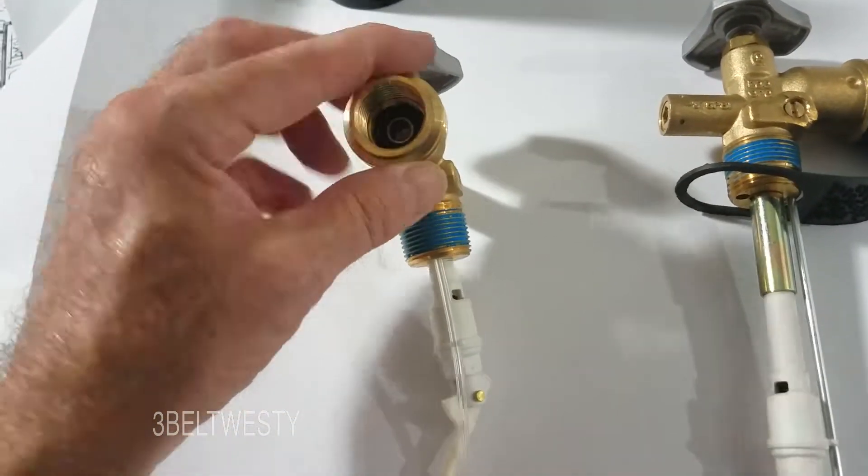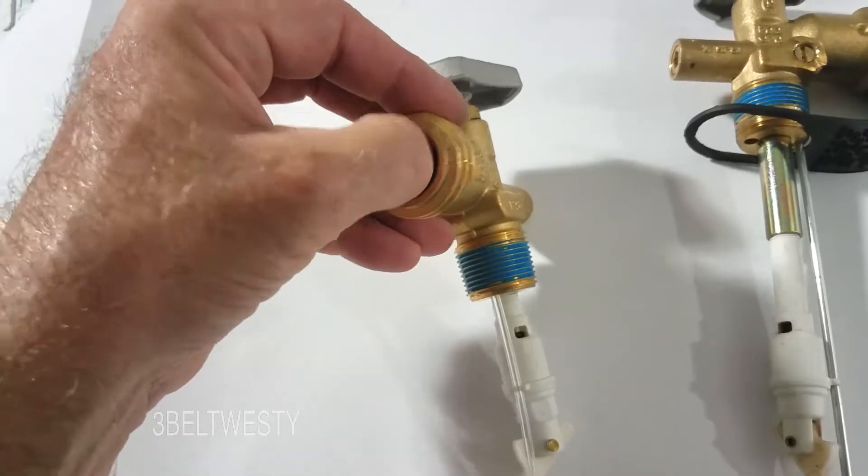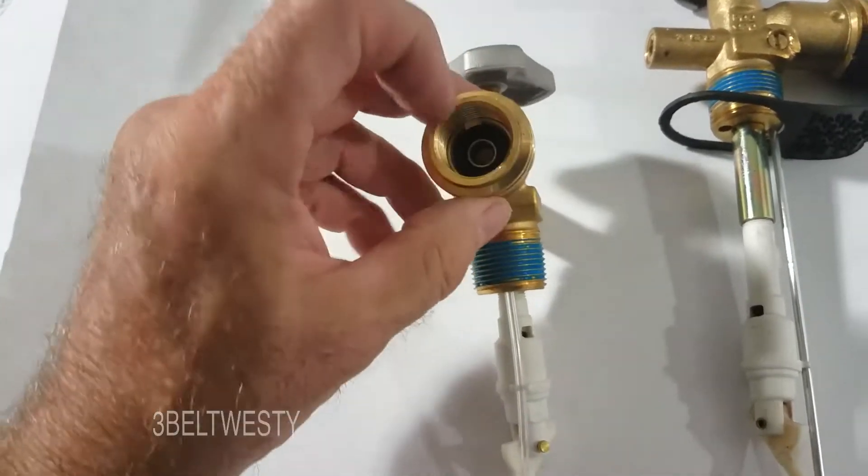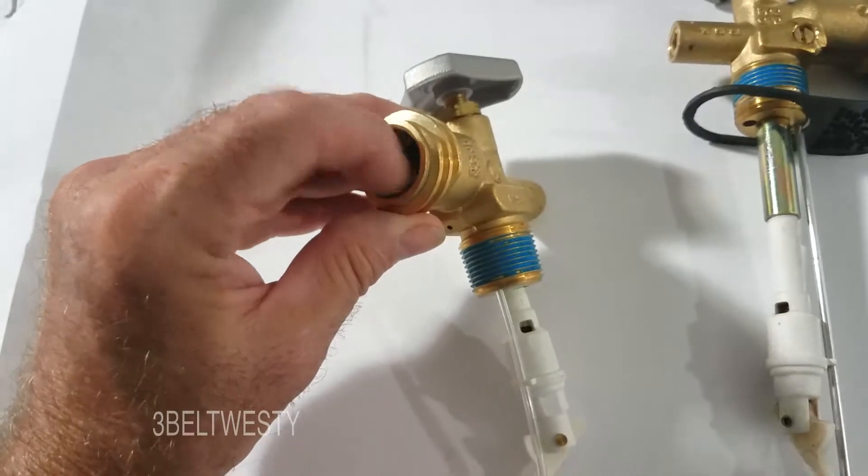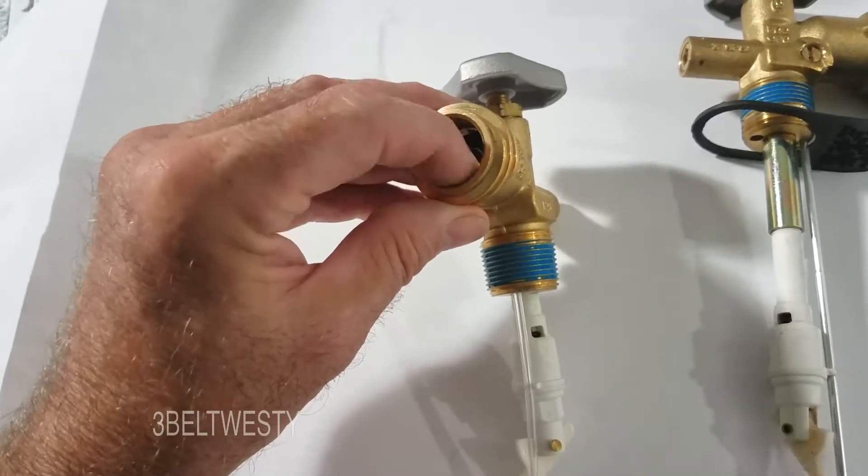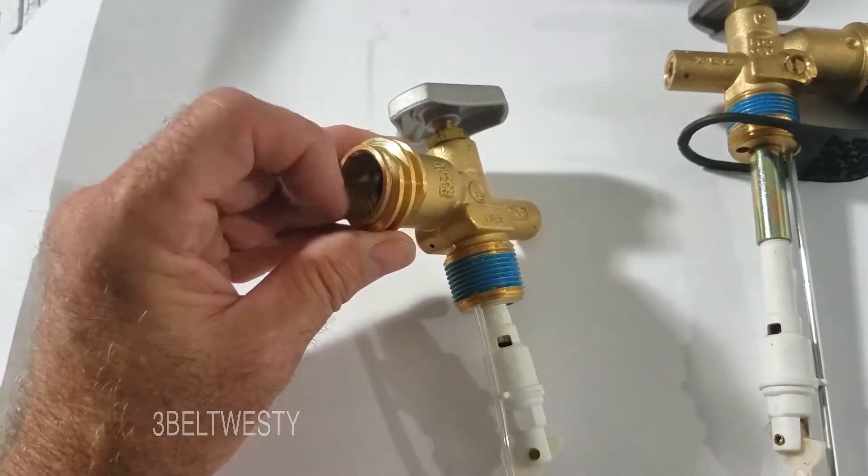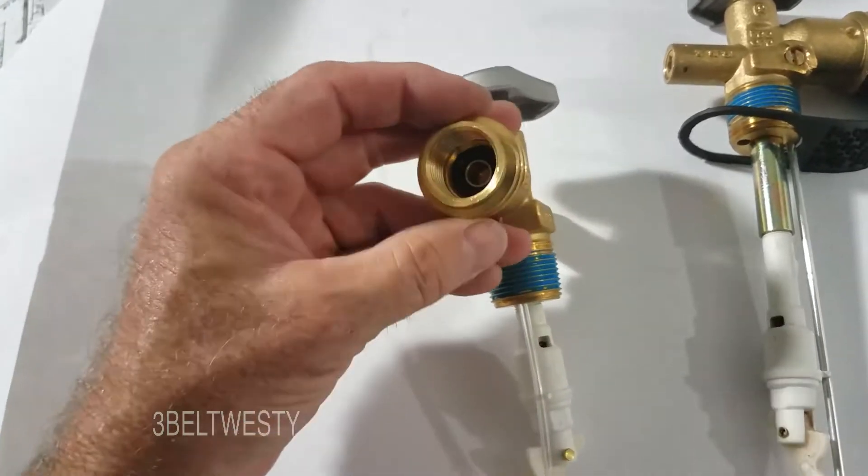This fitting has been around in here, the inside, since probably I'd have to guess the 1930s. It's in the books from the early 1950s, late 1940s on, but propane and butane, it shows the POL threads.